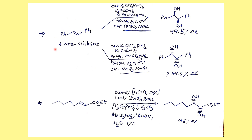Looking at examples with trans-alkenes: DHQD-PHAL gives the diol with beta-face selectivity, and DHQ-PHAL gives the diol with alpha-face selectivity. If AD-mix-alpha is given, you know you will get the alpha-face diol; if AD-mix-beta, the beta-face diol. The conditions to memorize are: potassium osmate, potassium ferricyanide as additives, and the solvent. For an alpha-beta unsaturated ester using DHQ, the diol from the alpha face is obtained with excellent enantioselectivity.